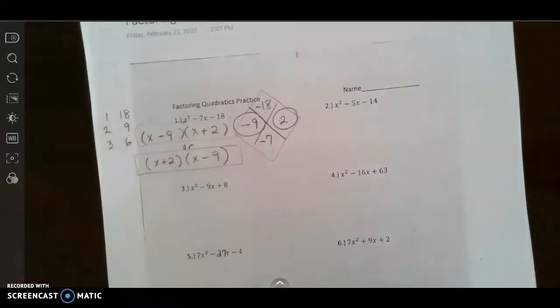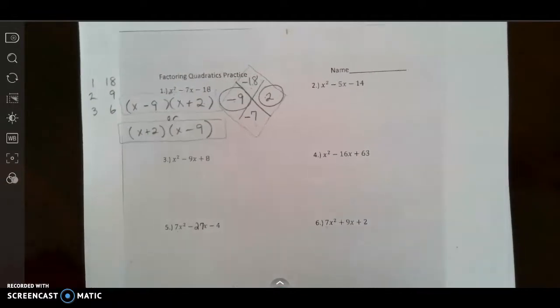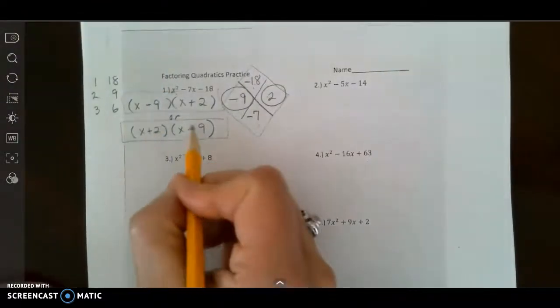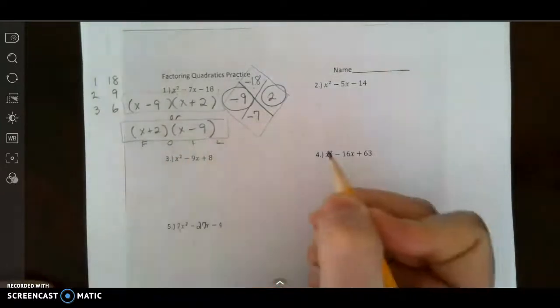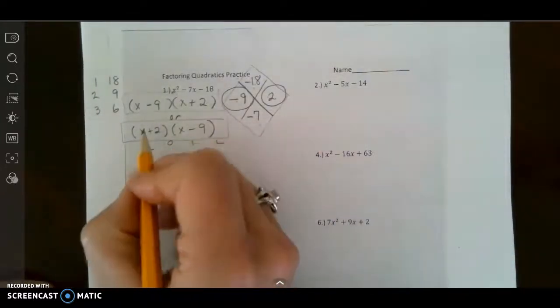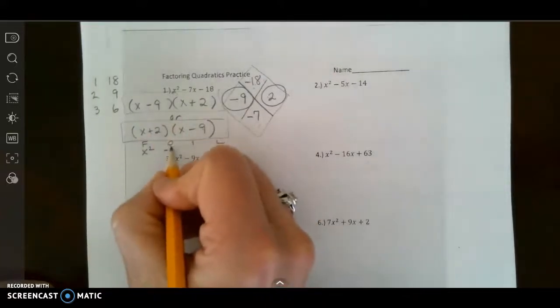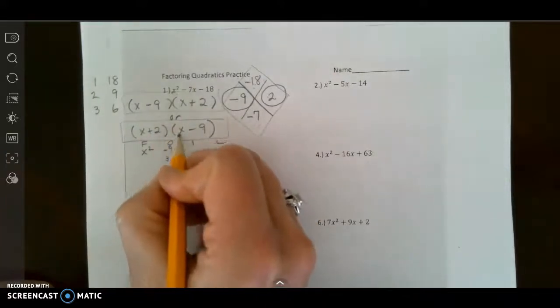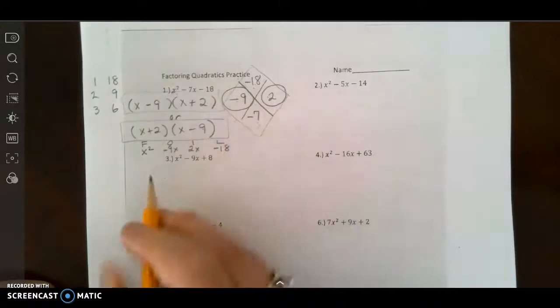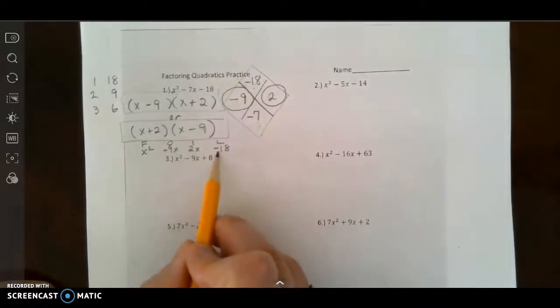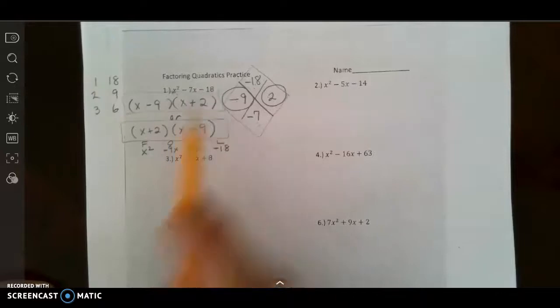You can always check your work. When you hand in a quiz on factoring you should already know if you got it right or not because when you multiply it back out you should get what you started with. So if I was to FOIL this, first terms give me x squared, the outer terms give me negative 9x, my inner terms give me 2x, and my last terms give me negative 18, and when I get that together I do get x squared minus 7x minus 18.